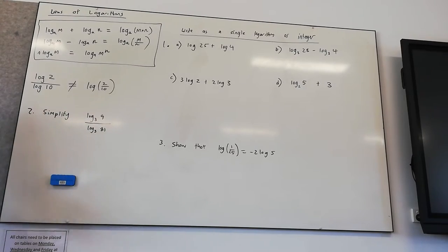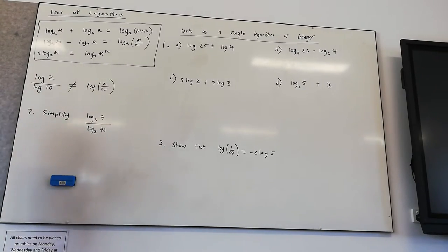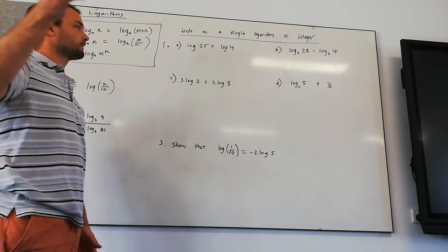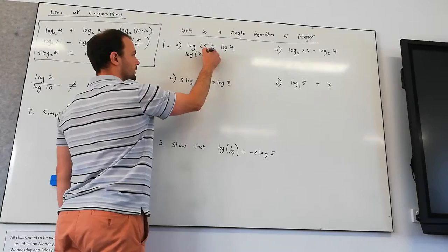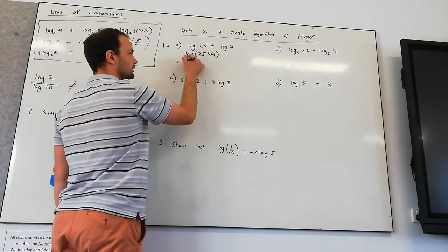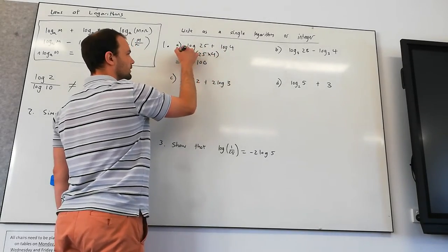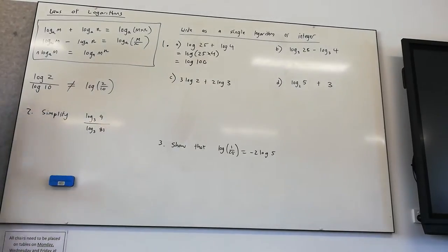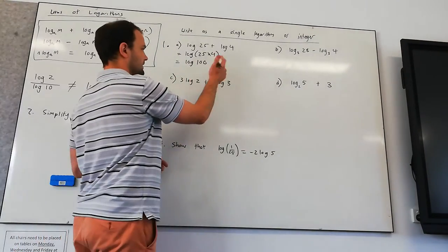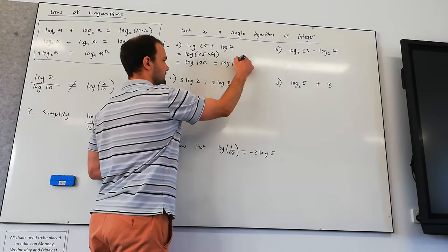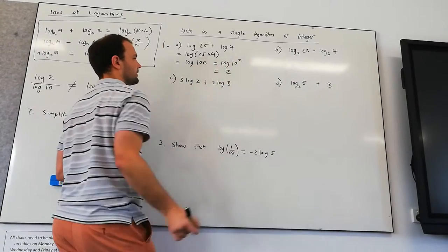We've got, right as a single logarithm or if you can, an integer. That just means a whole number. So we've got log 25 plus log 4, that's going to be log of 25 times 4, which is log of 100. So we've written it as a single logarithm, but we can actually simplify this. Because it's in base 10, we know it's log of 10 to the power of 2, and we know that simplifies to be 2.